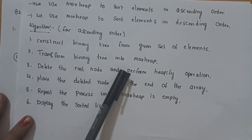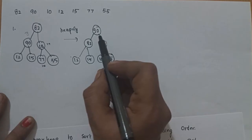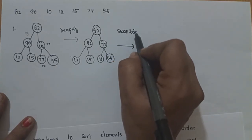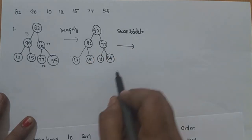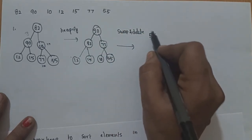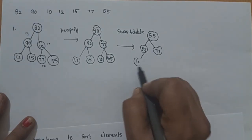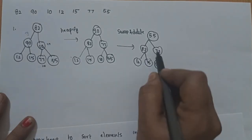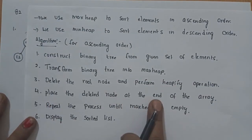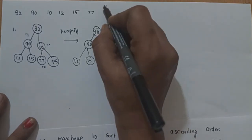The next step is to delete the root node and perform the heapify function. To delete, swap the root node with the last leaf node and then delete it. We swap 90 and 55: 55 becomes the root, with children 82 and 77, then 12, 15, 10. We then delete 90 and place it at the end of the array.